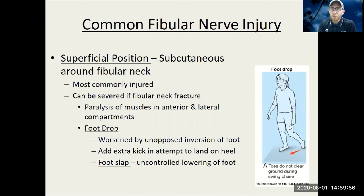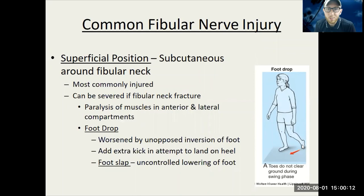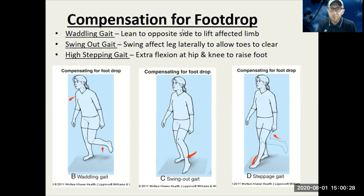If the common fibular nerve is damaged, the patient might have foot drop. The common fibular nerve goes to the anterior and lateral compartments with the deep and superficial fibular nerves, so they cannot dorsiflex and cannot evert. Their foot just drops into plantar flexion and sometimes slaps against the ground — land slap, land slap. There are three different types of compensations for foot drop: they might bring it to the side by shifting, swing it out, or step over. Look for these things when observing people walking.